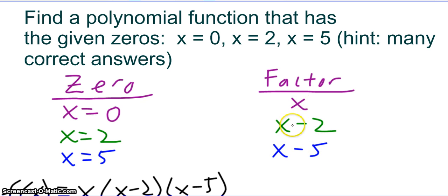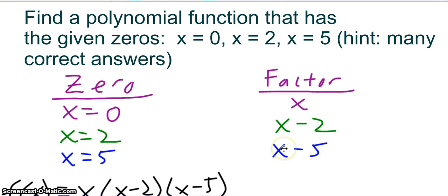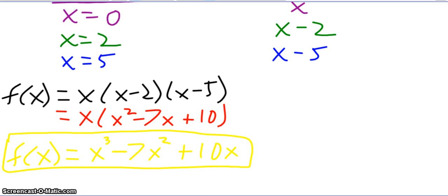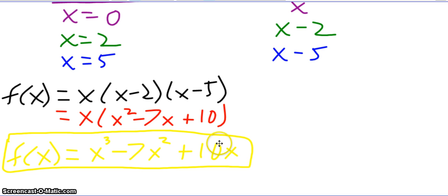These are the simplest forms of each factor. For instance, if I want to make this more complicated, I can put any degree on the x factor — this could be x to the 5th and it still meets the requirement. Same with x minus 2: it could be x minus 2 to the 7th. So the simplest form is f of x equals x times the quantity x minus 2 times the quantity x minus 5, which multiplies out to f of x equals x cubed minus 7x squared plus 10x.